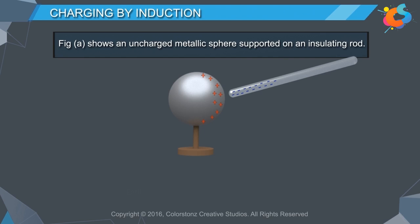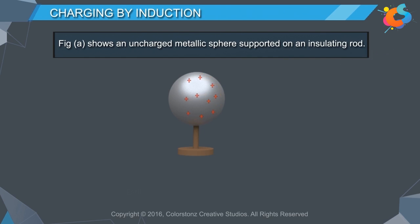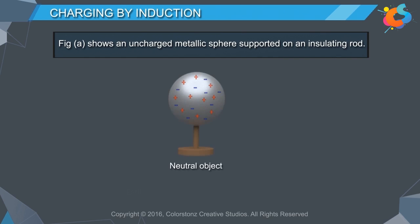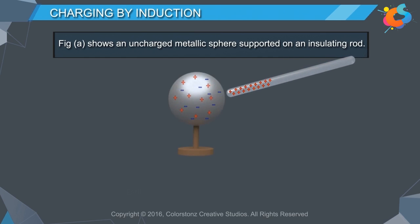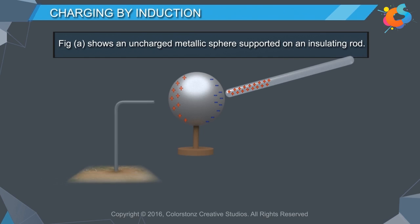When the plastic rod is removed, the positive charge gets distributed uniformly over the sphere. Similarly, if a positively charged plastic rod is brought closer to a sphere, the free electrons in the sphere will move closer to the plastic rod and positive charges accumulate at the other end. When a conducting wire which is grounded is connected to the positive end of the sphere,